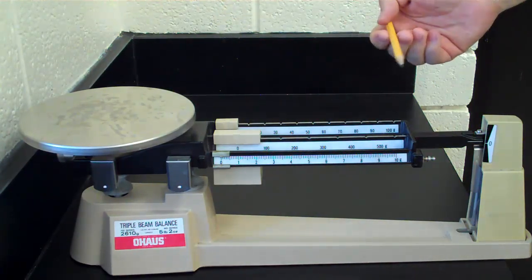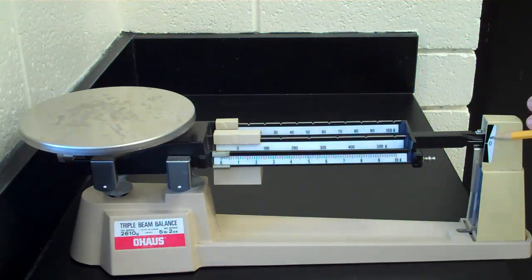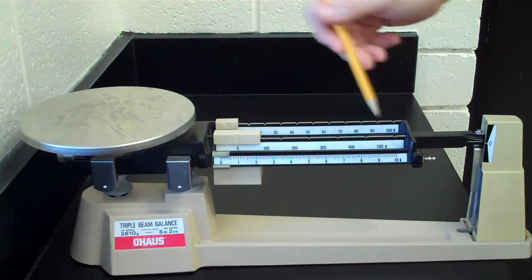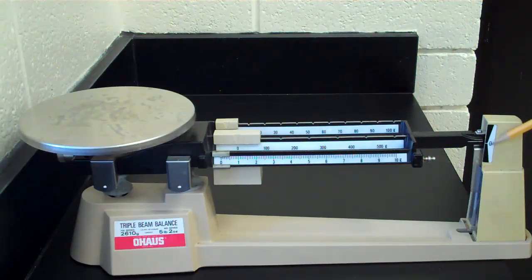First thing we want to do is make sure that the two white lines, there's a white line on the balance arm, and then there's a white line on this fixed point here.